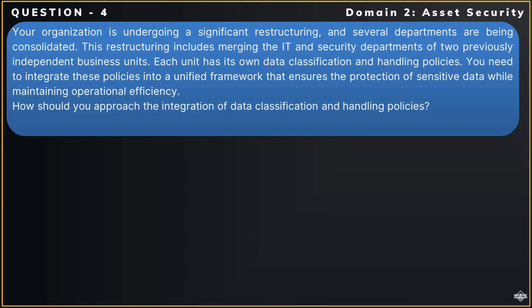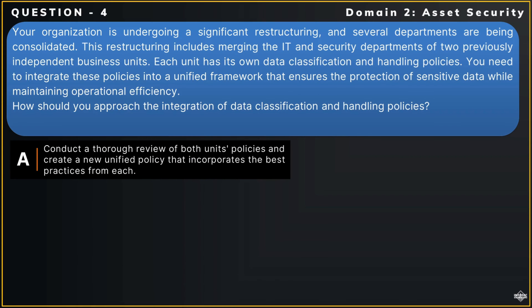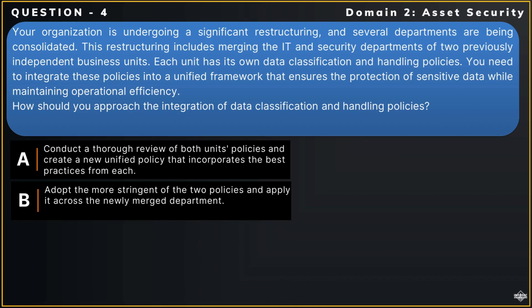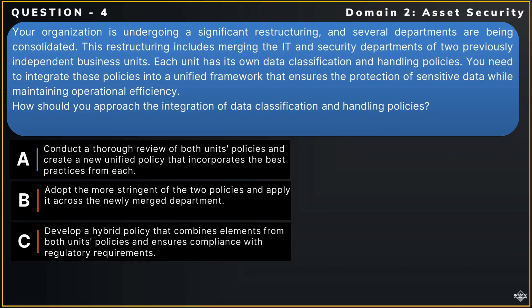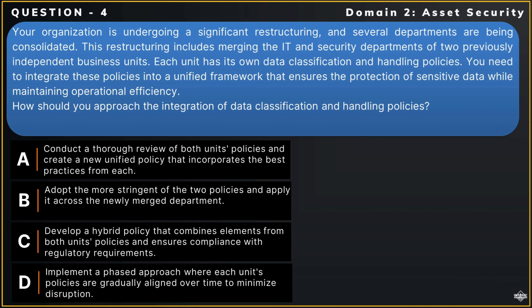Your options are: Option A — Conduct a thorough review of both units' policies and create a new unified policy that incorporates the best practices from each. Option B — Adopt the more stringent of the two policies and apply it across the newly merged department. Option C — Develop a hybrid policy that combines elements from both units' policies and ensures compliance with regulatory requirements. Option D — Implement a phased approach where each unit's policies are gradually aligned over time to minimize disruption.